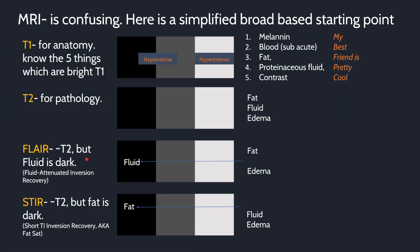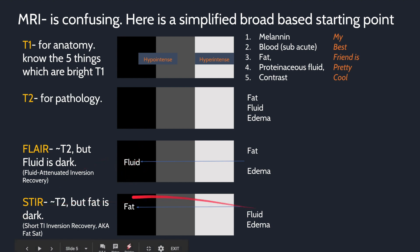MRI gets a little more confusing, but here is my broad way of thinking about it — and I think if you keep this in mind throughout whatever MRI you see, this will get you maybe 75% of the way there. T1 is generally for anatomy; there are only five things that are bright on T1, and this is important to know and memorize — I have a mnemonic I find helpful. T2 is generally for pathology, because fluid and edema are bright, and many pathologies in the body — whether neoplastic, infectious, or inflammatory — are associated with fluid and edema. Fat is also bright on T2. FLAIR and STIR help distinguish which one it is: on FLAIR, regular fluid turns dark; on STIR, fat turns dark.